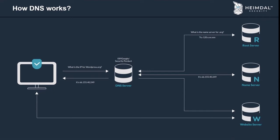A root server doesn't know the IP address of a domain, but it knows where the top-level domain server is. For example, google.com has the .com top-level domain, so the root server redirects the DNS server to the .com TLD server. After that, the DNS server asks the name server that manages the domain for its IP address and receives it. When the DNS server receives the IP address, it saves it in cache and sends it back to the user, who then accesses the actual website server.